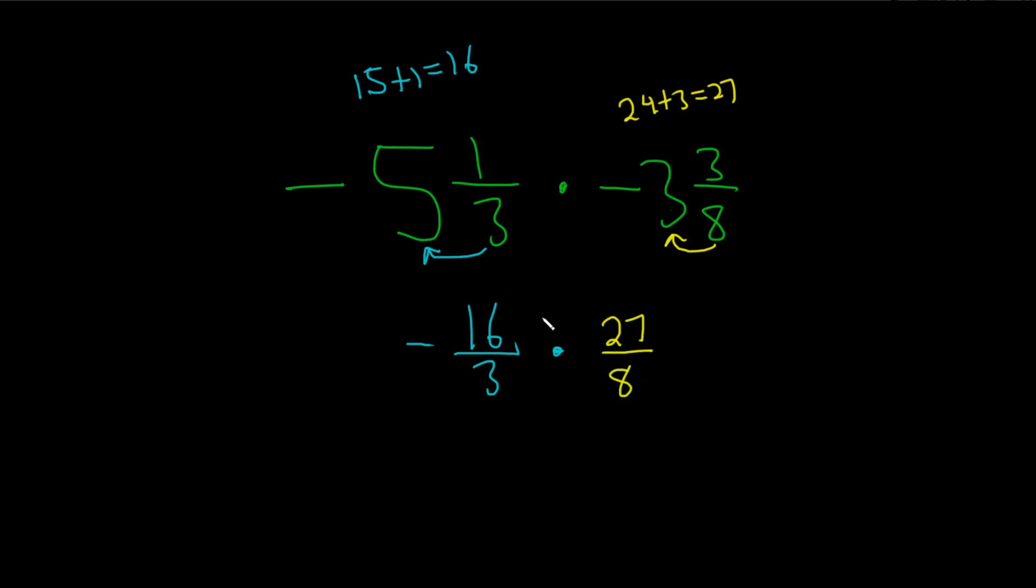Let's just check it one more time. 5 times 3 is 15, 15 plus 1 is 16. Boom. There it is. Oh, I forgot the negative. 8 times 3 is 24, 24 plus 3 is 27. Boom. There it is.